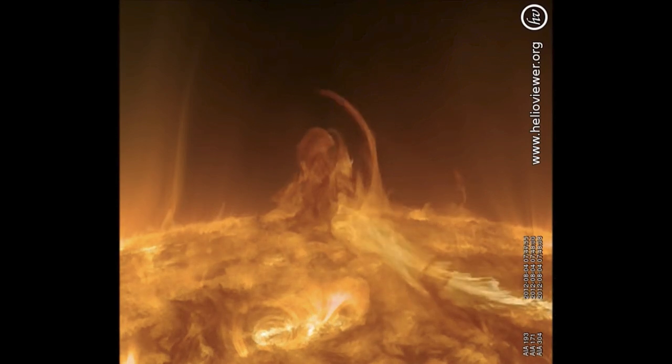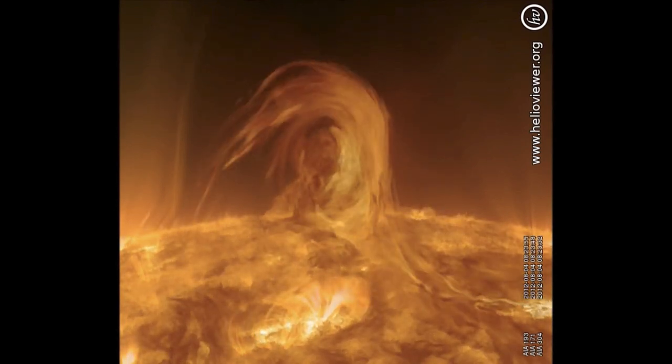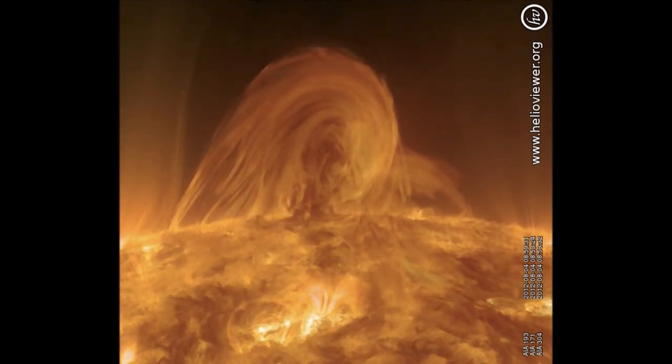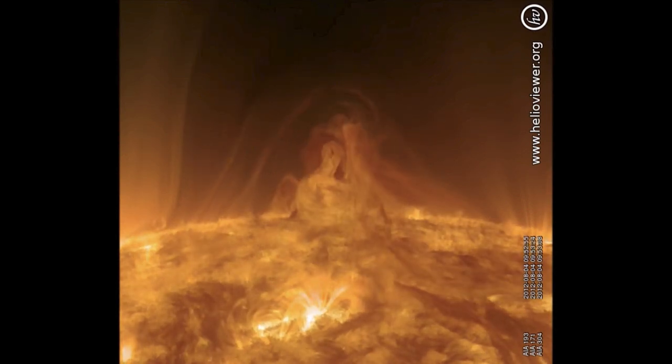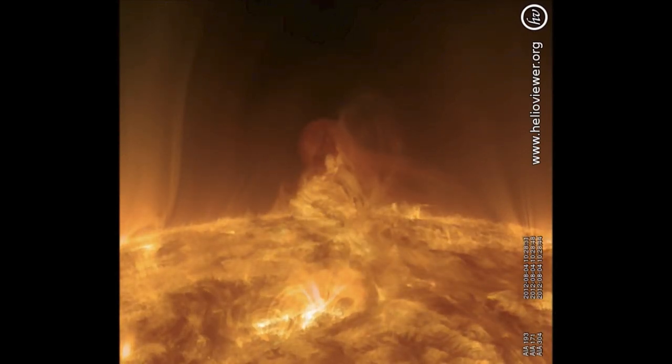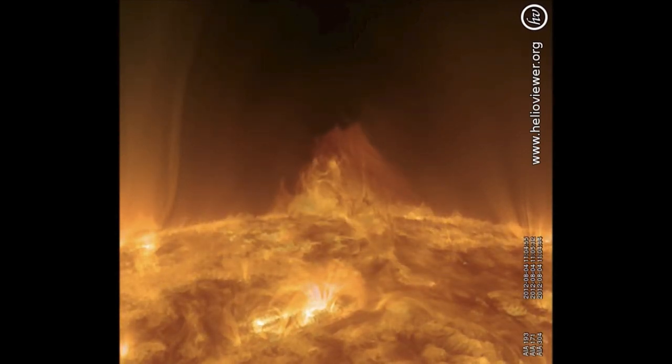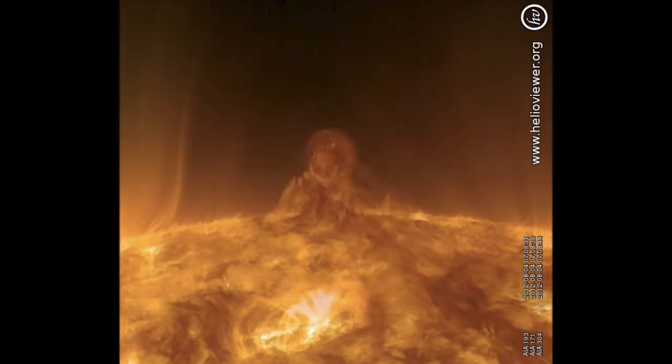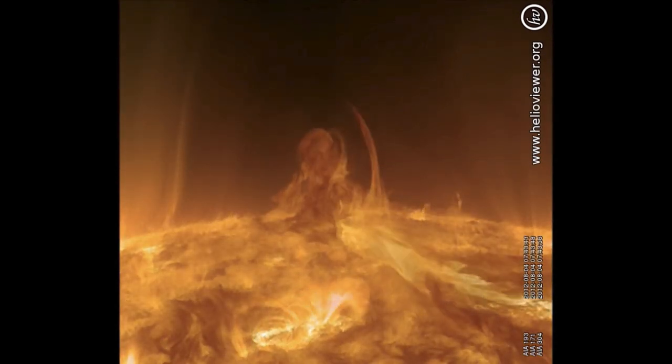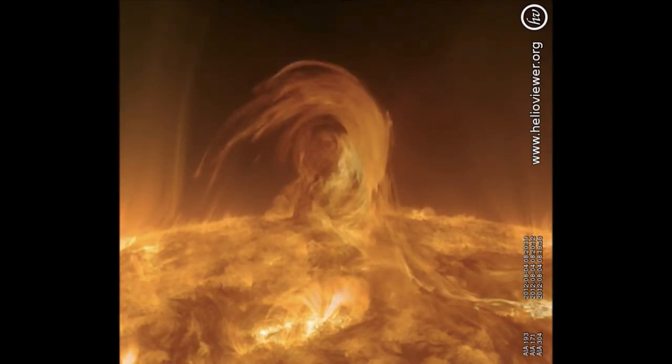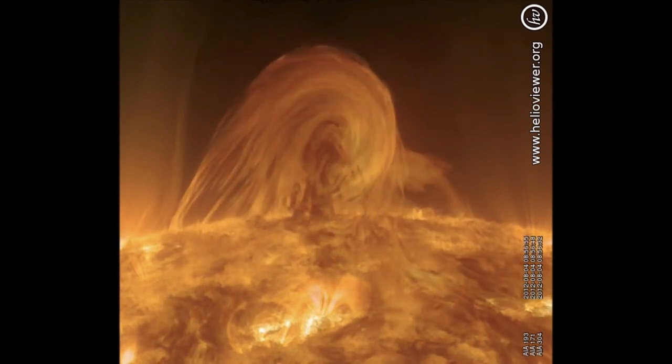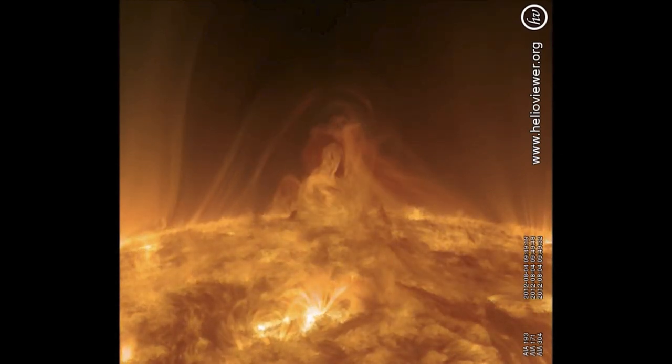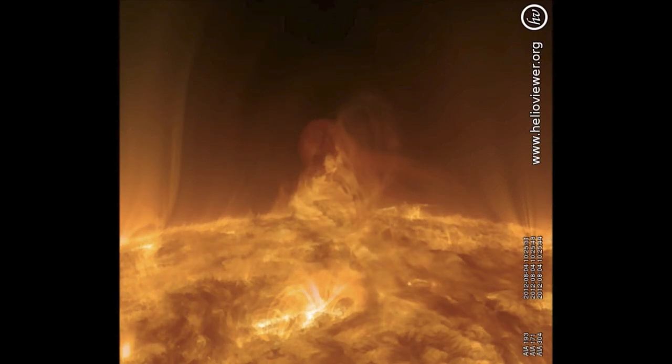The sun rotates in what we call a differential rotation, meaning that it doesn't take the same amount of time for it to rotate at the poles as it does at the equator. In fact, it rotates faster at the equator by a few days. It may take about 25 days to rotate once at the equator and several days longer, 28, 29, or 30 days as you get closer to the pole.